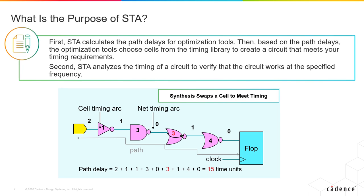Synthesis tools convert your RTL to gates. Place and Route further optimizes your design. For these optimization tools to find the right cells for the right location, they rely on static timing analysis to calculate the path delays.